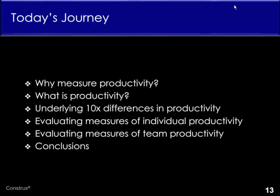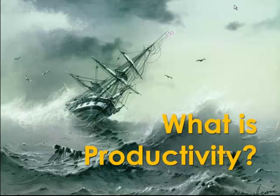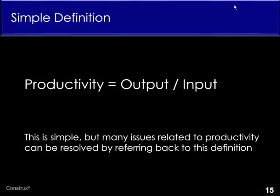Let's turn to what is productivity. At the simplest level, productivity is defined as output divided by input. It's very simple, but not overly simple, because an awful lot of the issues related to measuring productivity can be resolved by simply referring back to this definition. The lack of understanding that productivity equals output divided by input, or lack of clarity about what the outputs and inputs are, actually gives rise to a lot of the issues we see in attempting to measure productivity — and indeed in failed attempts to measure productivity.